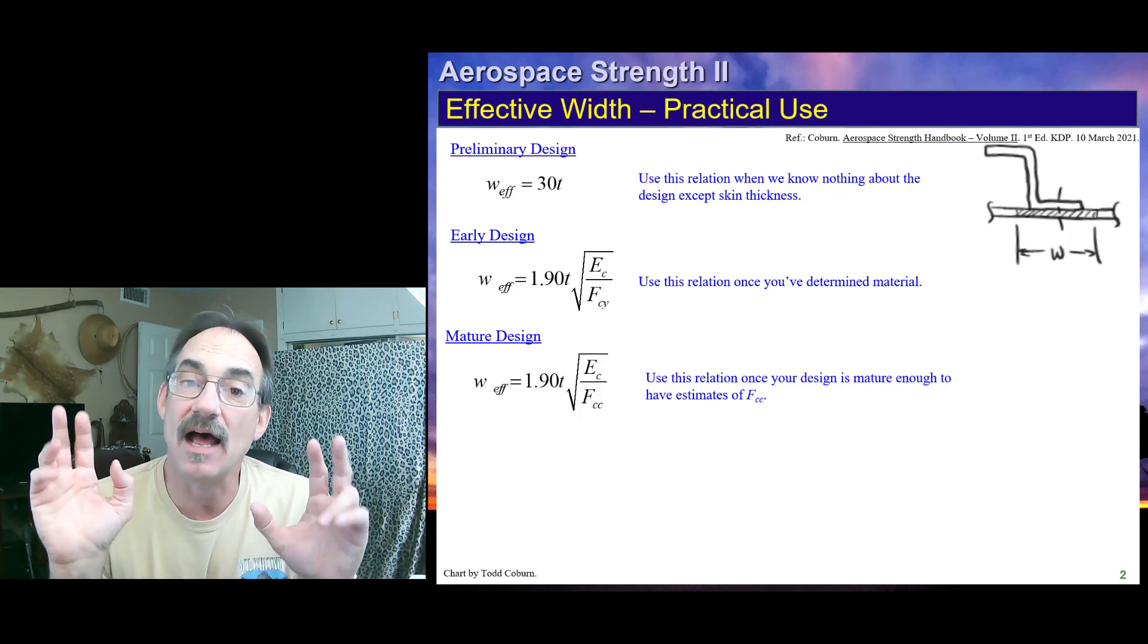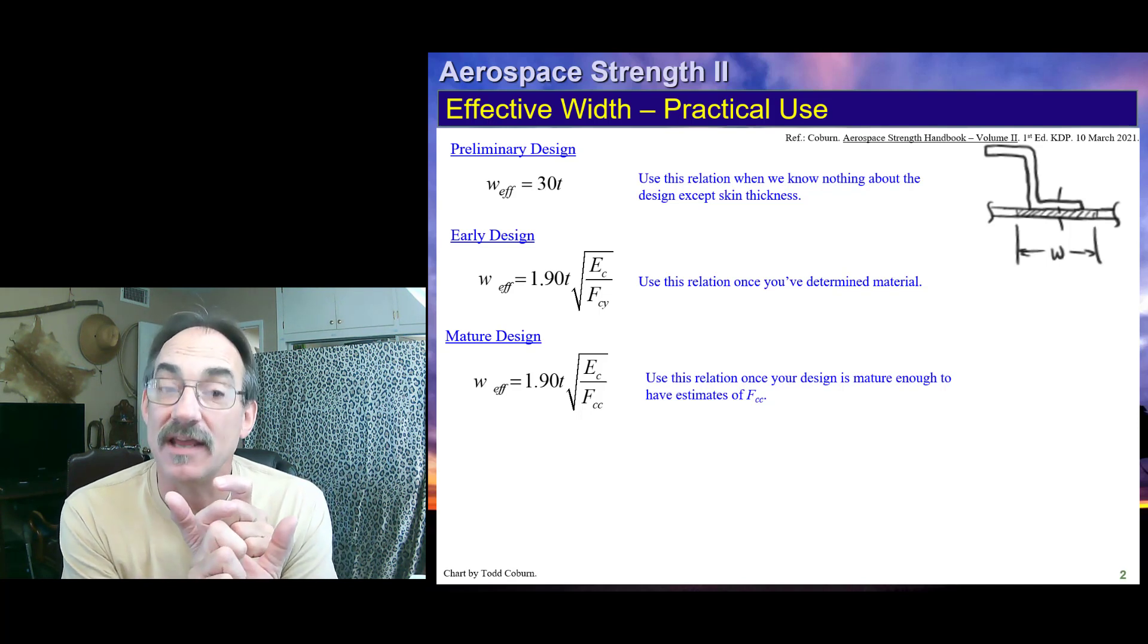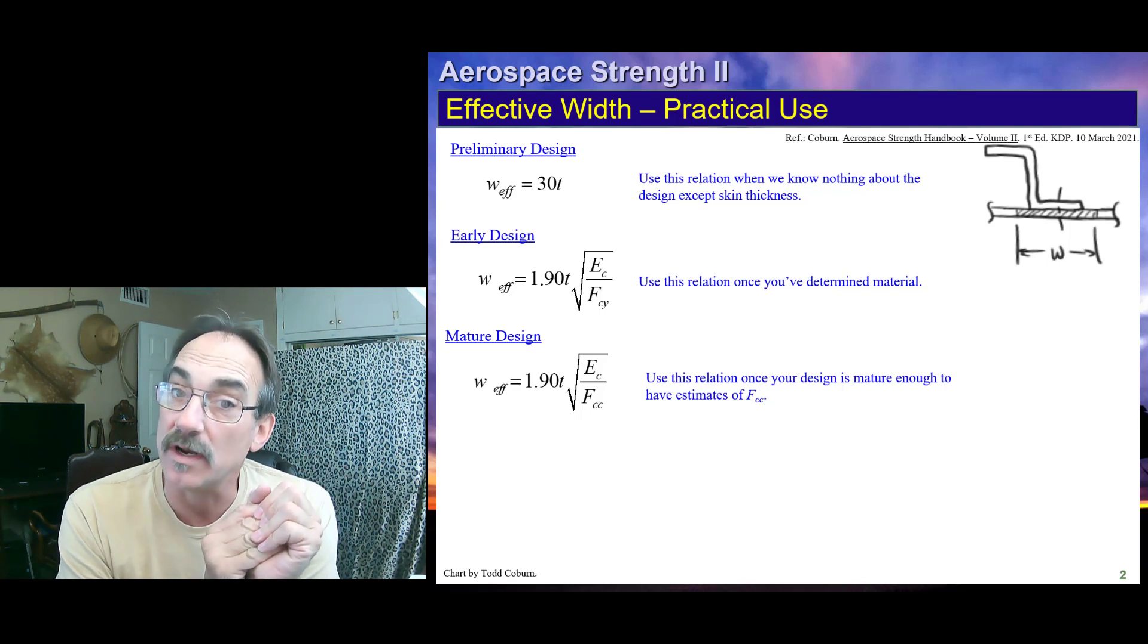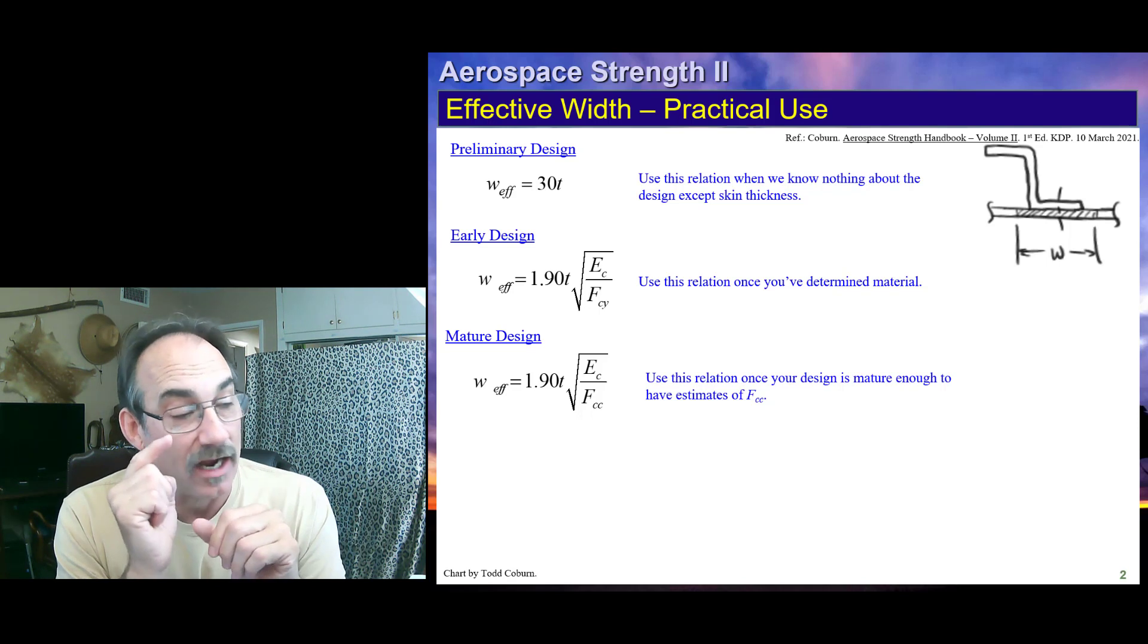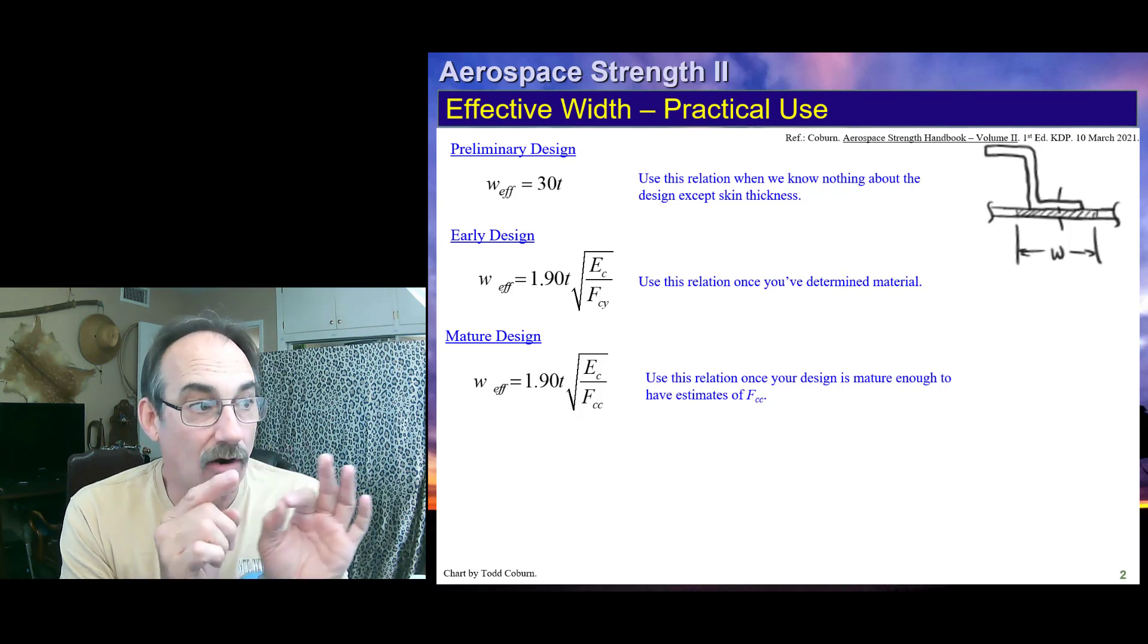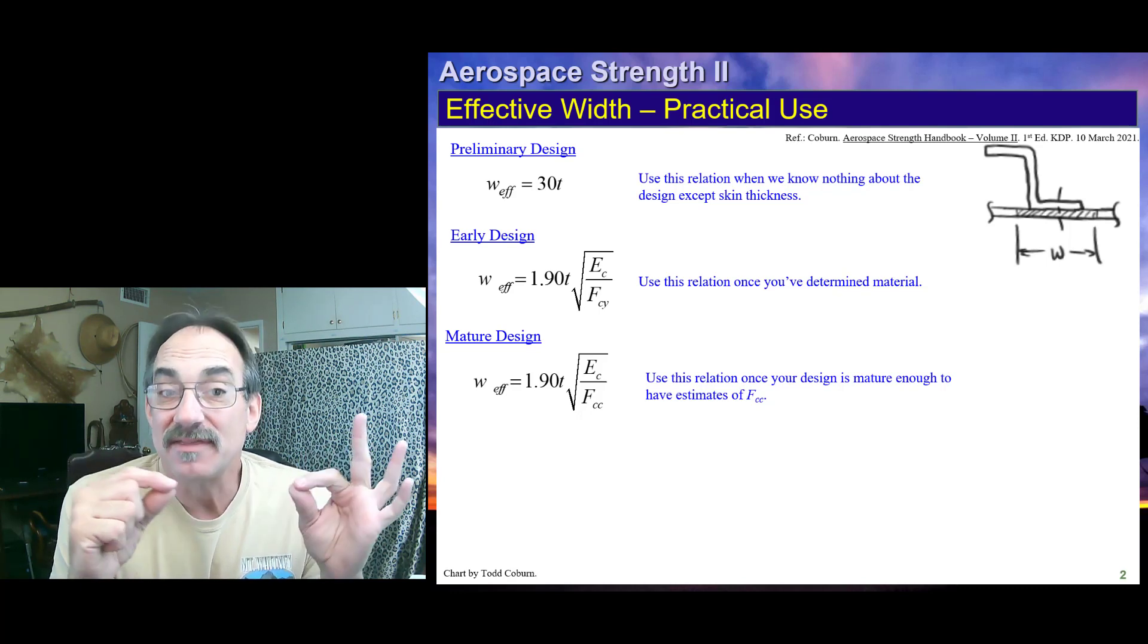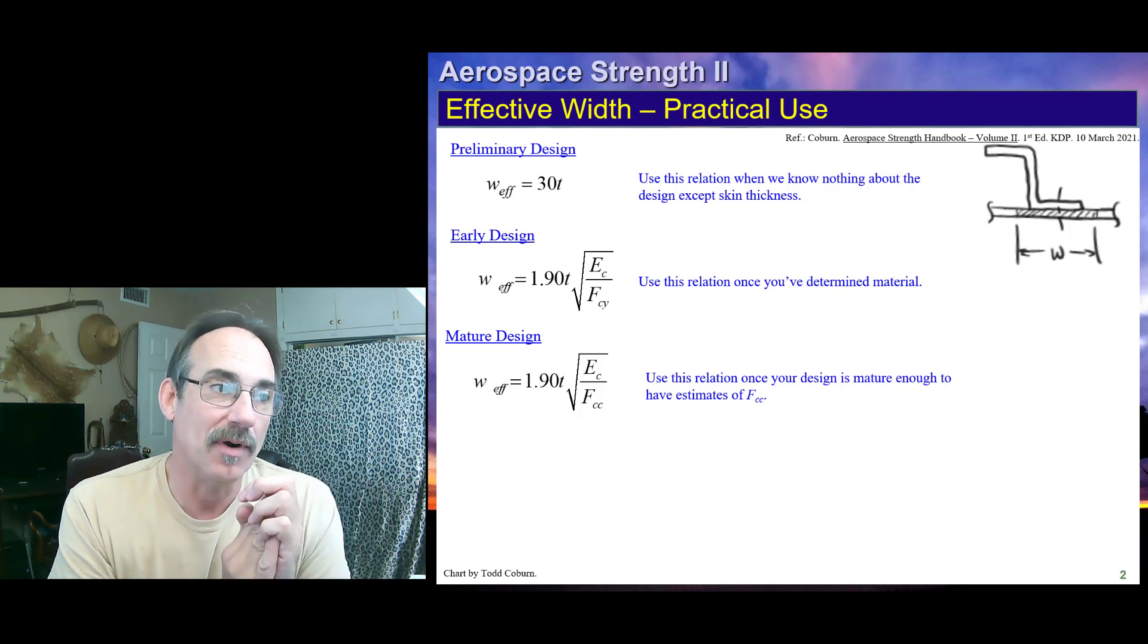So, 30T is a common design formula. That means 15T on one side of the fastener and 15T on the other side of the fastener. This formula actually comes from plugging in 2024-T3 properties into the equation that we saw, the more detailed equation that we saw back in the last slide, with our early design formula. So, it's actually approximate, but if we know nothing but the thickness of the skin, this is a great way to estimate what the effective width will be appropriate.